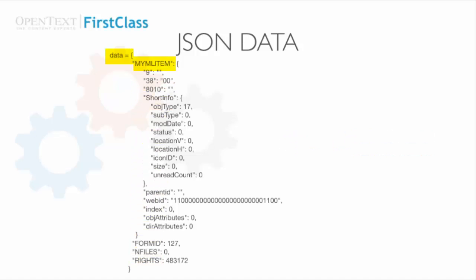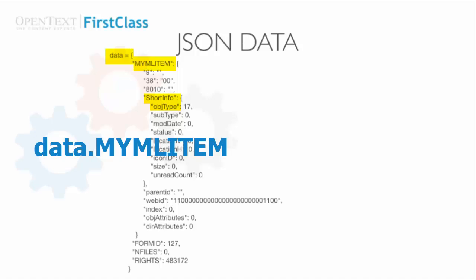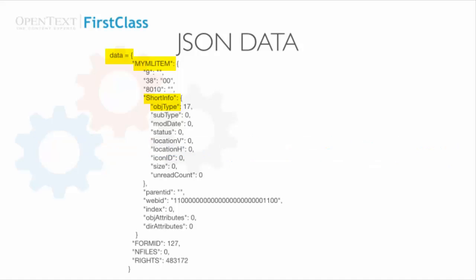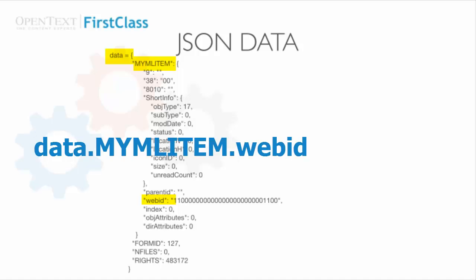The mymlitem key value is itself an object, and it contains a number of key-value pairs, one of which is shortinfo, whose value is another object with a series of key-value pairs. If we wish to retrieve the nested objtype value, we would need to use data.mymlitem.shortinfo.objtype. To get the webid, it's just data.mymlitem.webid.